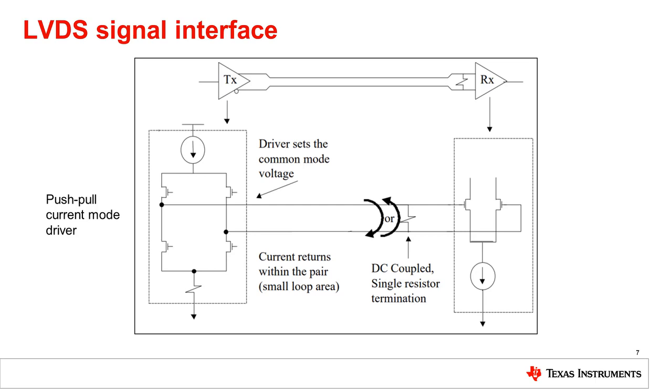This, in turn, is what generates the differential voltage of 350 millivolts across the receiver inputs.